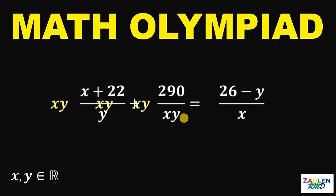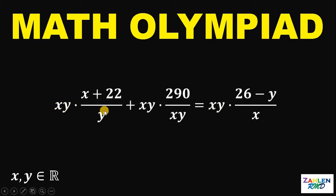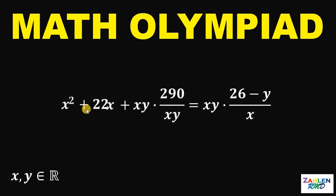If we do that, we get xy times x plus 22 over y plus xy times 290 over xy equals xy times 26 minus y over x. Now, let's simplify. xy times x plus 22 over y will give us x squared plus 22x.